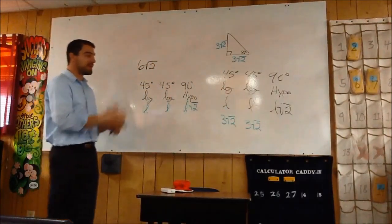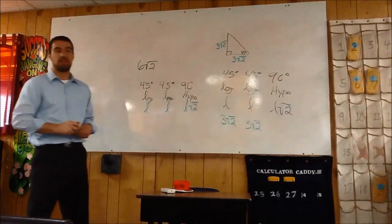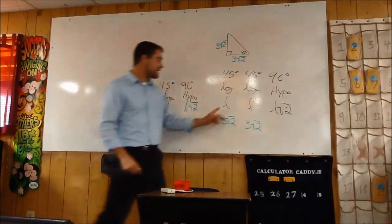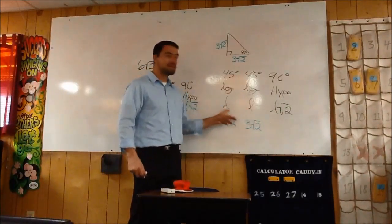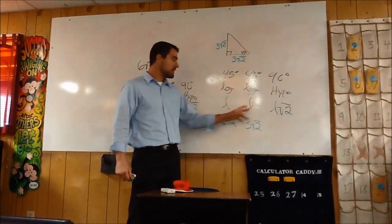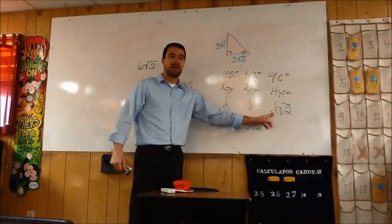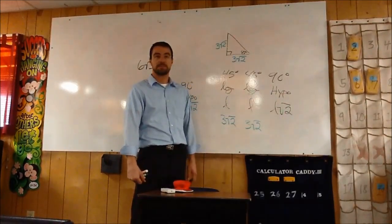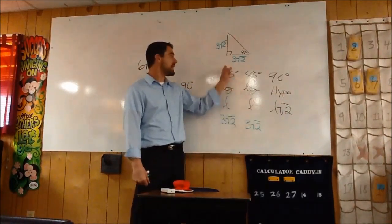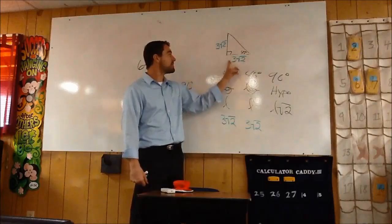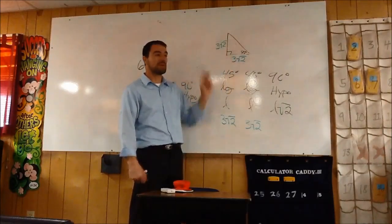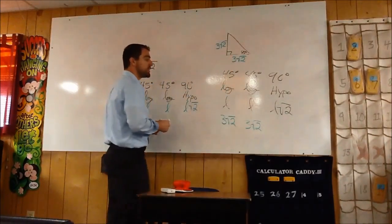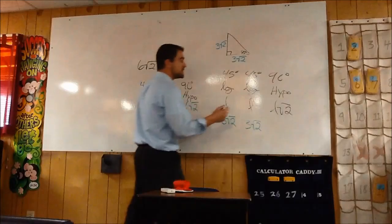But we have to figure out the length of the hypotenuse. Just follow the rule: whatever the leg is, you're going to take that value and multiply it by the square root of 2. So you're going to take this value, 3 square root 2, and multiply it by the square root of 2.